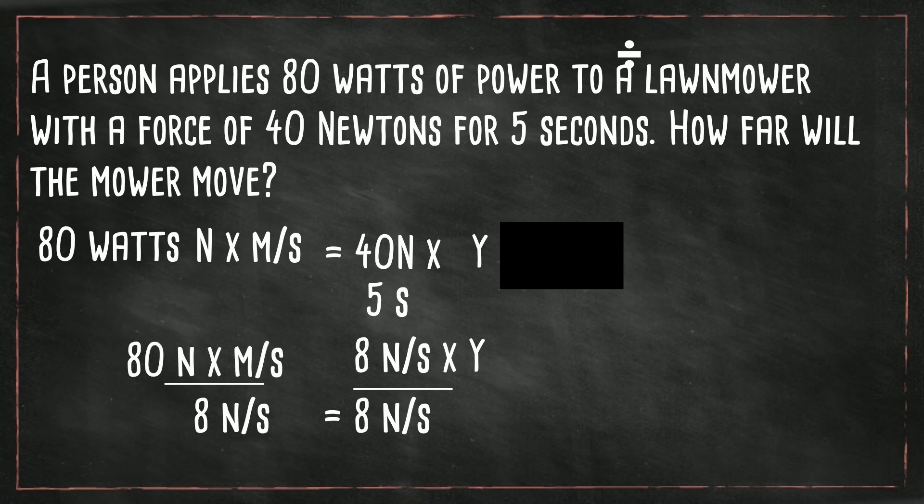Now we have 80 newtons times meters per second divided by eight. The two eights cancel on the right leaving us with y. 80 divided by eight is 10. Notice that the newtons and seconds cancel, and we're left with meters. So the lawn mower will be moved 10 meters.